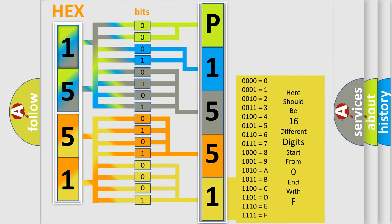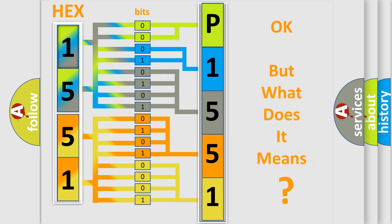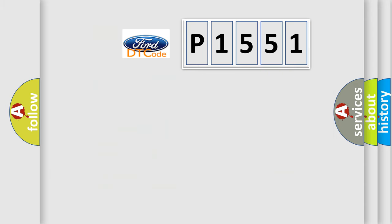We now know in what way the diagnostic tool translates the received information into a more comprehensible format. The number itself does not make sense to us if we cannot assign information about what it actually expresses. So, what does the diagnostic trouble code P1551 interpret specifically?